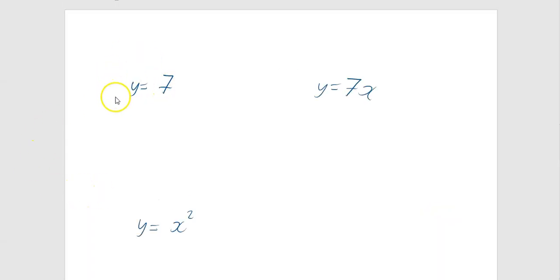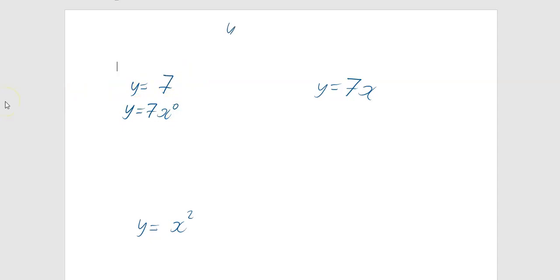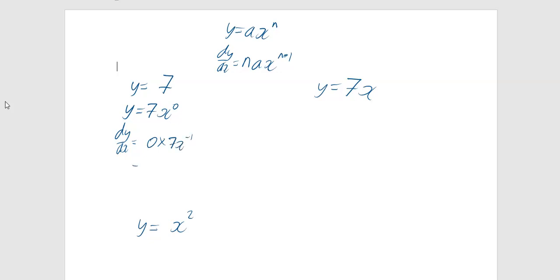Let's look at why you get what you get when you differentiate. For y equals 7, written in index form that's y equals 7x to the power of 0 — and that's the same as y equals 7 because x to the power of 0 is just 1. The rule is: y equals ax to the n gives dy by dx equals n times a x to the n minus 1. So differentiating gives 0 times 7x to the minus 1, which is just 0.